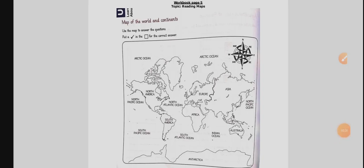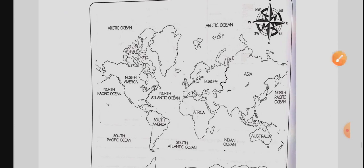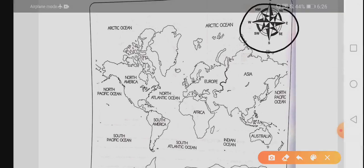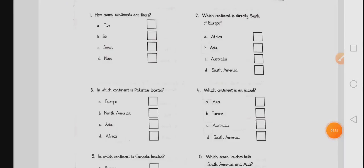Right now, we are going to solve another worksheet. It's a very easy worksheet. We just have to put the tick in the right section of the multiple choice questions. If you see, this is the map of the world. And here we have a direction indicator that will tell us about the direction of the different areas of the world.